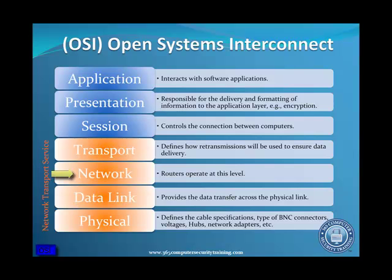The best example of a device that operates at this level is a router. There are several security features operating on the network layer. These include data origin authentication, access control, and confidentiality of connection.